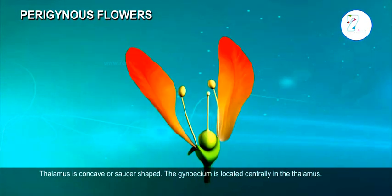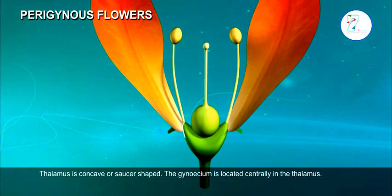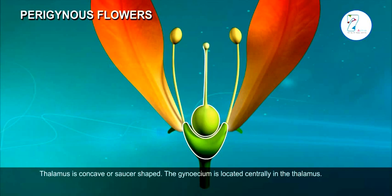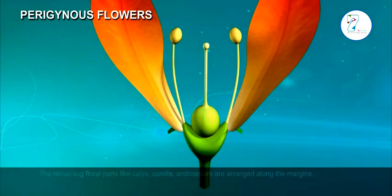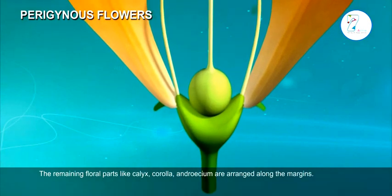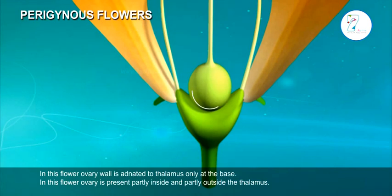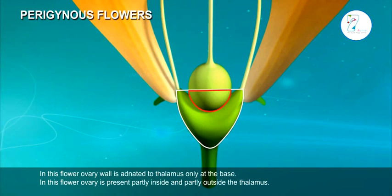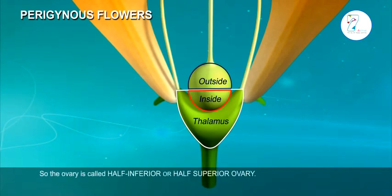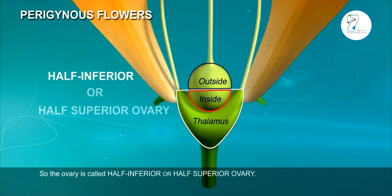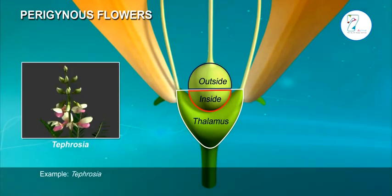2. Perigynous flowers. The thalamus is concave or saucer-shaped. The gynoecium is located centrally in the thalamus. The remaining floral parts, like calyx, corolla, and androecium, are arranged along the margins. In this flower, the ovary wall is adnated to the thalamus only at the base, so the ovary is present partly inside and partly outside the thalamus. So, the ovary is called half-inferior or half-superior ovary. Example: Tephrosia.